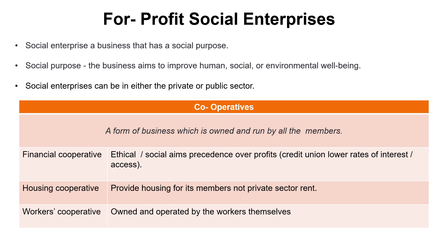Make sure you're confident with the term 'social enterprise' and what 'social purpose' means. Social enterprises are normally profit-oriented but set up for the benefit of their members. Cooperatives are the main form — a business run for and by its members. There are different types: financial, housing, and worker cooperatives. Examples include coffee growing, chocolate production, and more. The IB course places heavy emphasis on social enterprise alongside conventional business types.